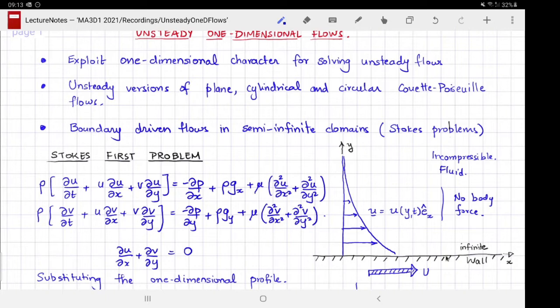In this case, because the wall is infinite in its extent, every point on the wall is identical to every other point. Therefore, the flow that develops in the fluid only depends on how far the point in the fluid is from the wall. In other words, the flow is purely in the x direction, and the flow speed only depends on the distance from the wall.